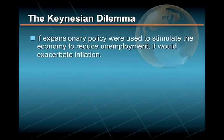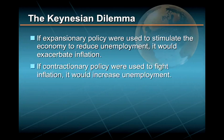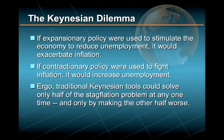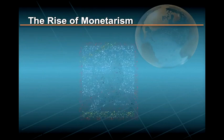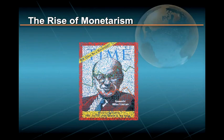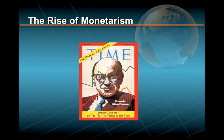The Keynesian dilemma was simply this: using expansionary policies to reduce unemployment simply created more inflation, while using contractionary policies to curb inflation only deepened the recession. That meant the traditional Keynesian tools could solve only half of the stagflation problem at any one time, and only by making the other half worse. It was this inability that set the stage for Professor Milton Friedman's monetarist challenge to the Keynesian orthodoxy.